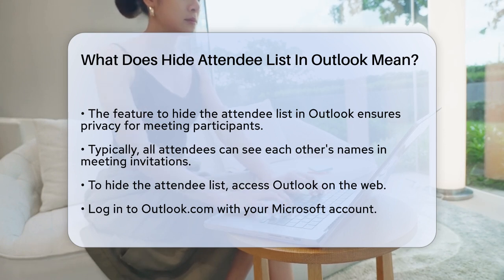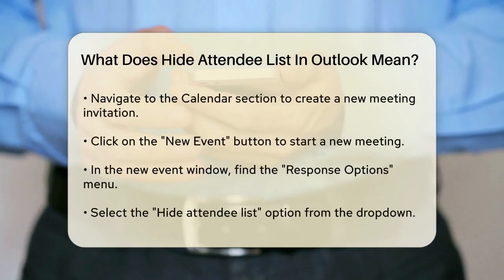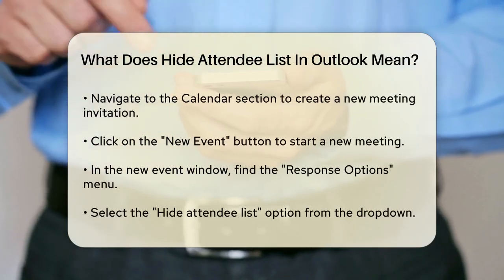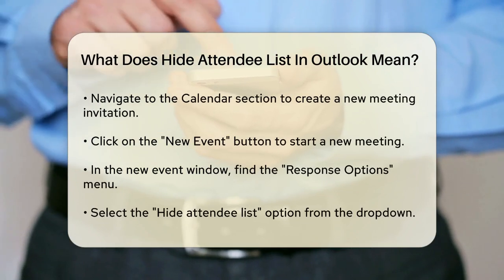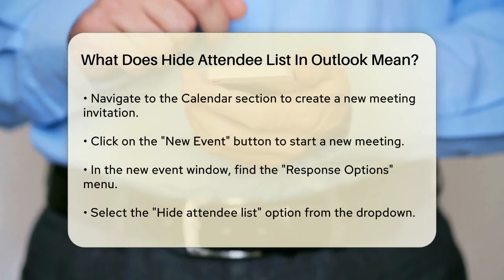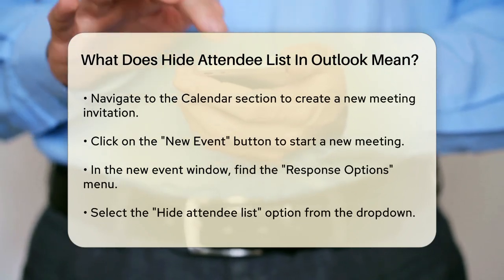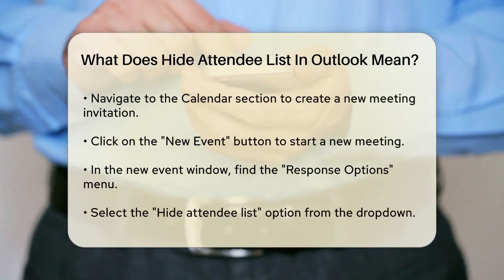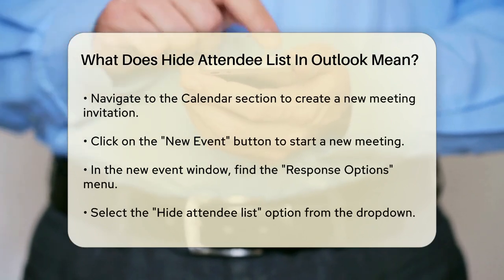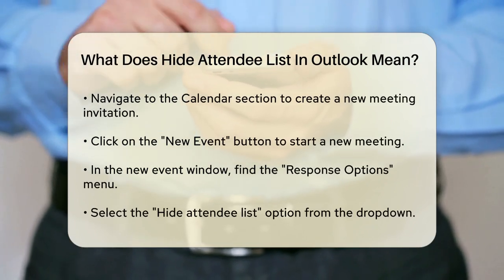To use this feature, you need to access Outlook on the web. Here's how you do it. First, open Outlook.com in your web browser and log in with your Microsoft account. Then, navigate to the Calendar section. Here, you'll click on the New Event button to create a new meeting invitation.